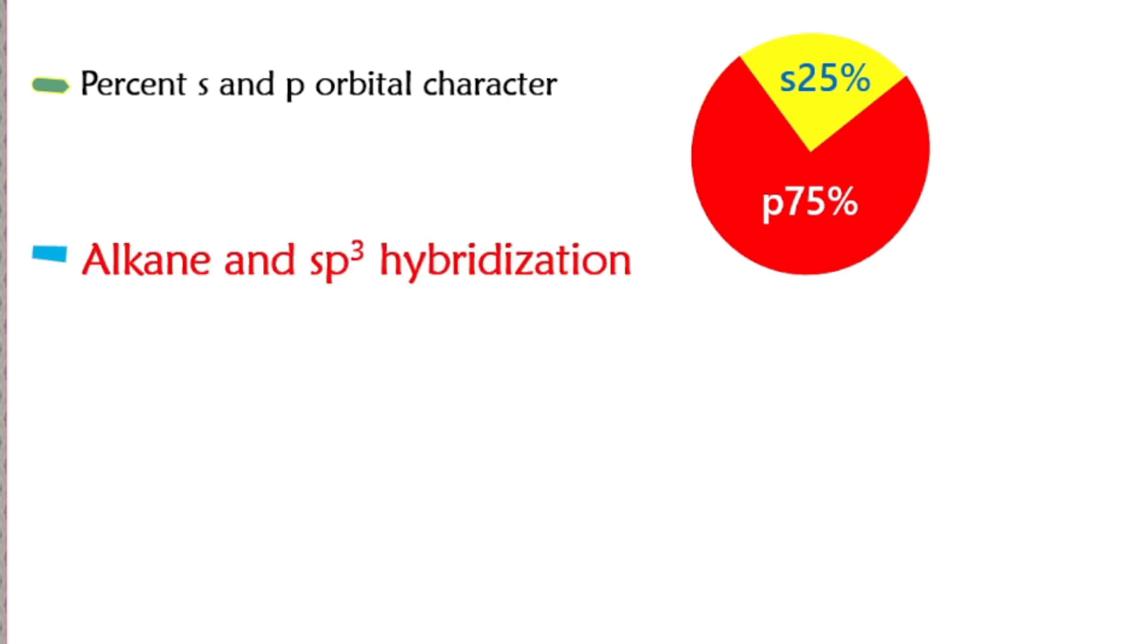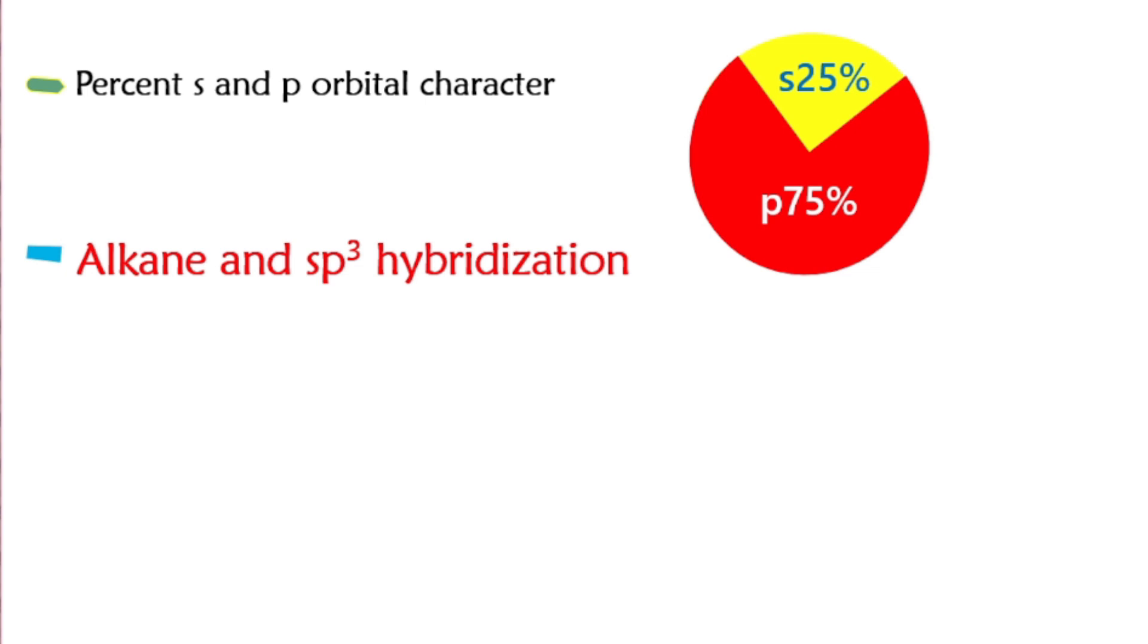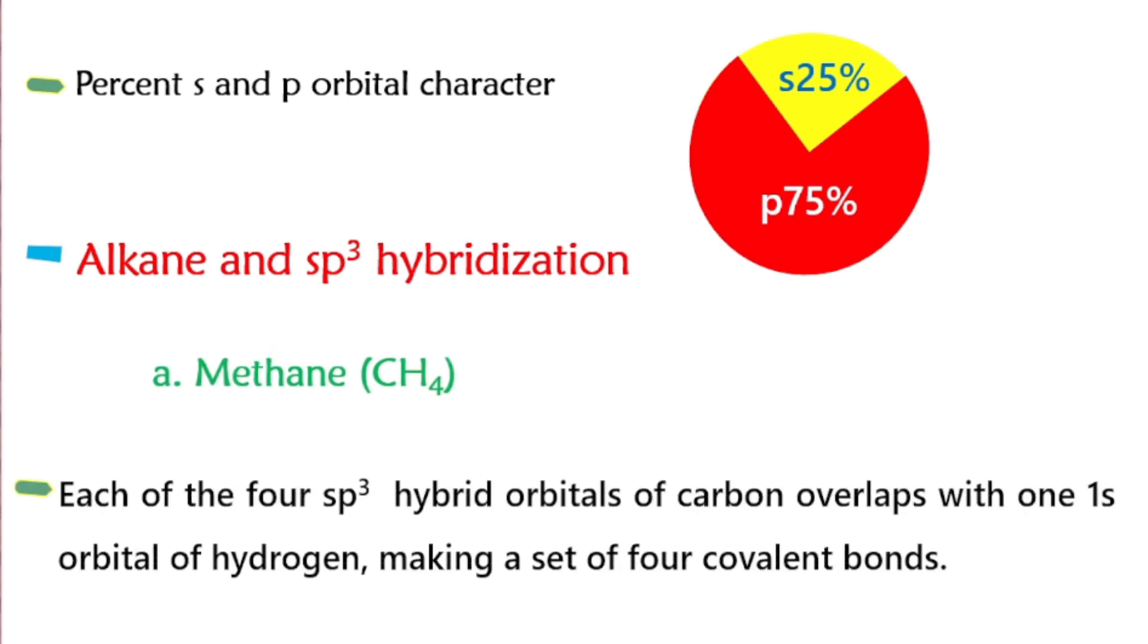Examples of compounds showing sp3 hybridization. Alkanes and other compounds show sp3 hybridization. Let's take the example of methane. Each of the four sp3 hybrid orbitals of carbon overlaps with 1 s orbital of hydrogen, making a set of four covalent bonds. In methane there are 4 hybrid orbitals and each one has an unpaired electron. These make bonds with four hydrogen atoms by overlapping. The bonds formed are four in number.